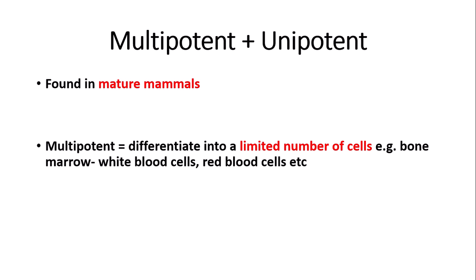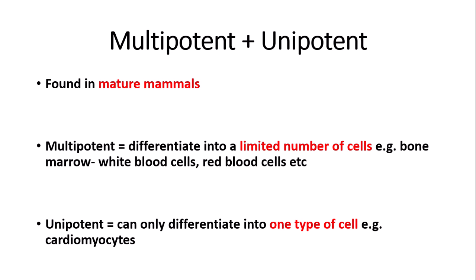Unipotent stem cells, as the name suggests, can only differentiate into one type of cell — for example cardiomyocytes, which are the muscle cells that make up the heart. So unipotent stem cells can only differentiate into one specific cell type.